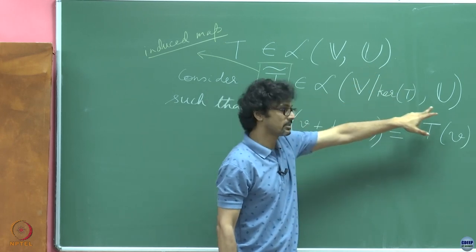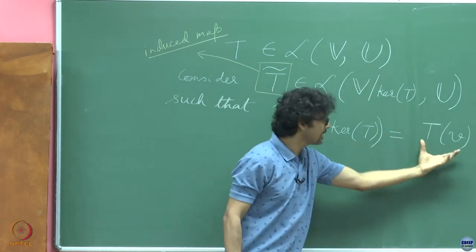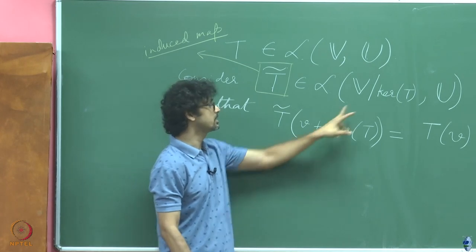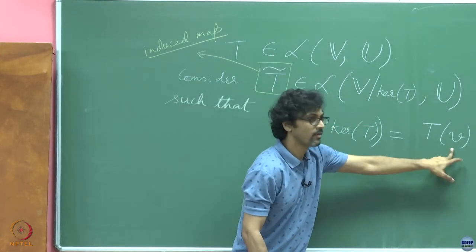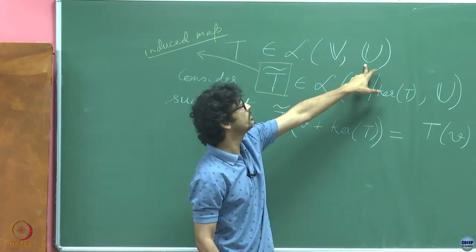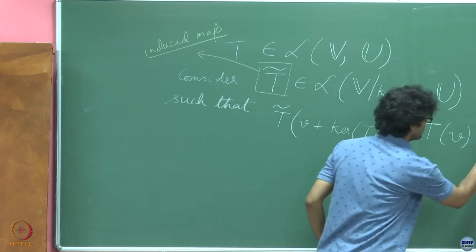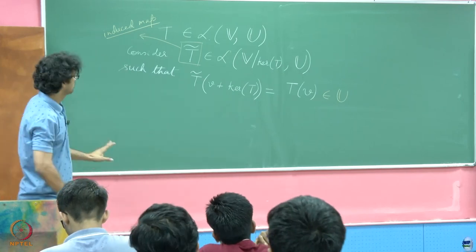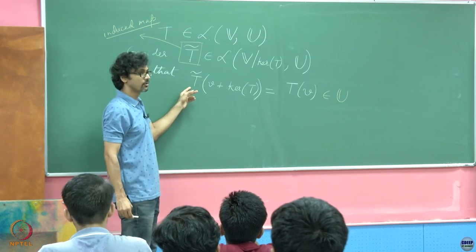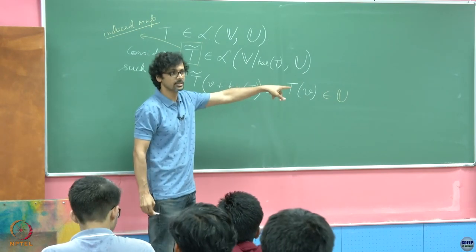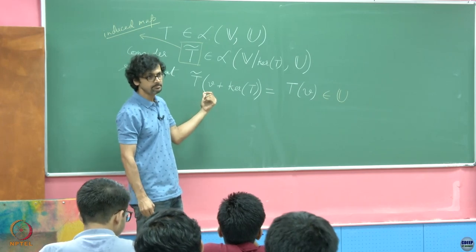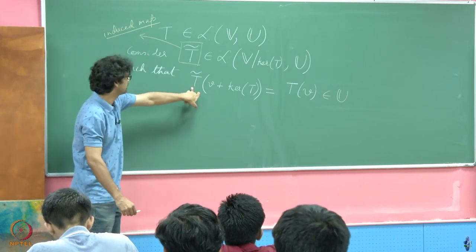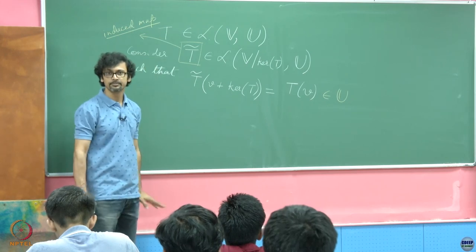So this is the original map which we are interested in studying and in our attempt to do so we have now cooked up this new map whose domain of definition is completely different but it maps to the same vector space U as the original map. So there is no confusion about where this object is taking fellows from and where those fellows are getting mapped under the influence of this induced map.